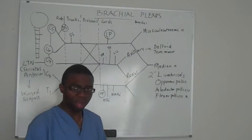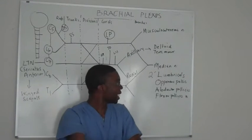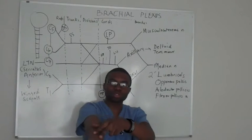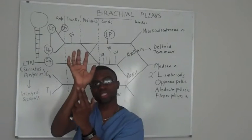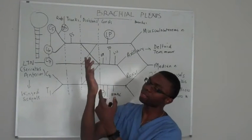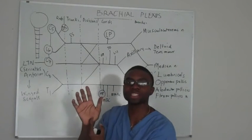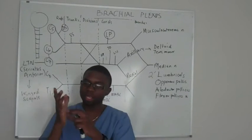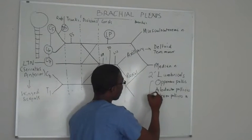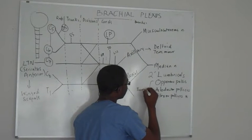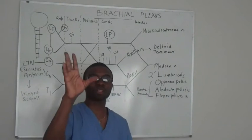The median nerve starts off all the way down, innervating all your flexor muscles. Then it's going to pierce through your flexor retinaculum and send a branch off called the recurrent branch of the median nerve. All these muscles I call your thenar eminence — and that's where you get the opponents pollicis, which allows you to oppose.